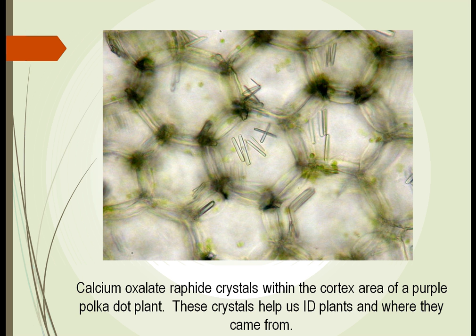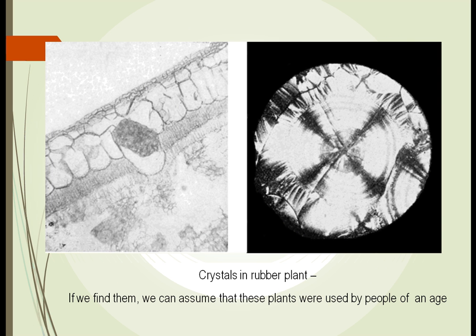Many plants today still have these crystals. Taro, which the Hawaiian people eat all the time, had these crystals in them, and mankind had to learn how to tame these crystals so you could eat the food. In the rubber plant, there are other crystals we find. When we find cells in a garbage pile that have these crystals, we can assume that the rubber plant was used by those people.